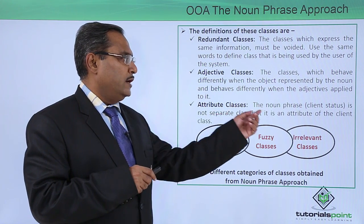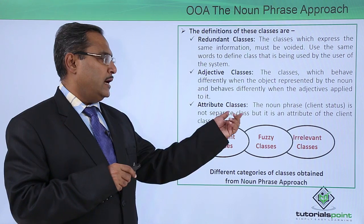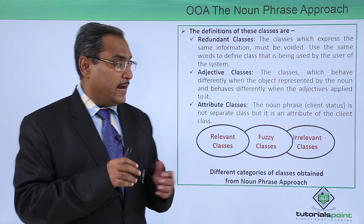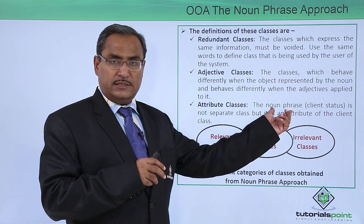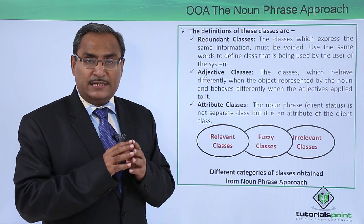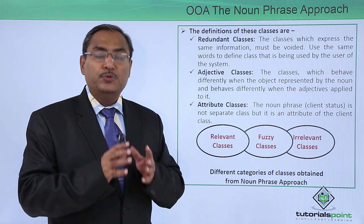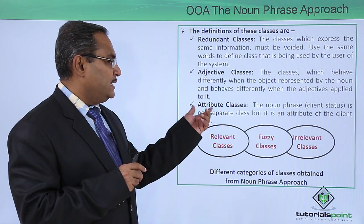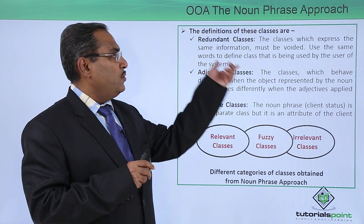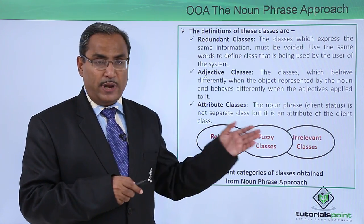Attribute classes: a noun phrase such as 'client status' is not a separate class but is an attribute of the client class. So against 'client status,' we cannot and should not create any separate class — it will be the attribute of a class. That is known as an attribute class. So we have defined three class types: adjective classes, redundant classes, and attribute classes.